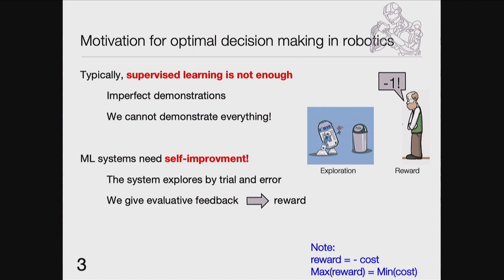Importantly, it depends whether you're an optimist or a pessimist. Classical control people are always pessimists — they minimize costs. Reinforcement learning people are always optimists — they maximize rewards. But that's actually the same thing if you just add a minus sign.